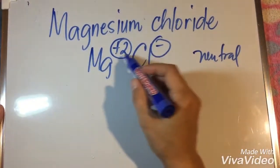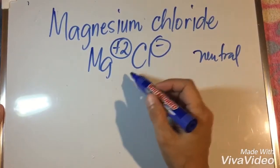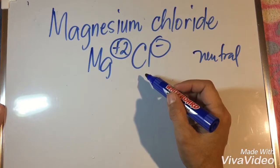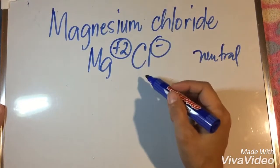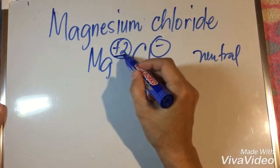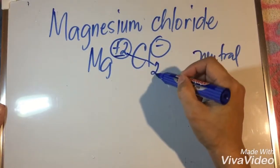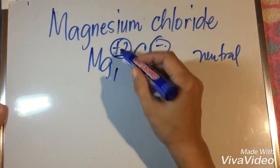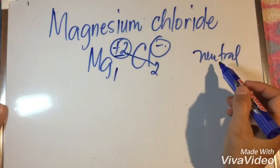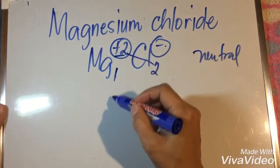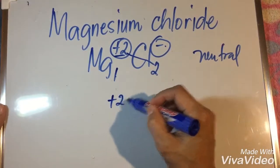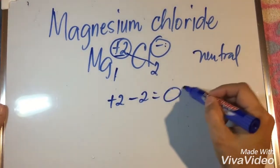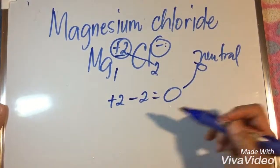Since we do not have an equal charge, what we're going to do is use the crossover method, or sometimes I name this one the crisscross process, meaning the charge of magnesium will be the subscript of chlorine and the charge of chlorine will be the subscript of magnesium. That makes the charges now equal to zero because we have positive two times one is positive two, negative one times two is negative two, which equals zero, meaning neutral.